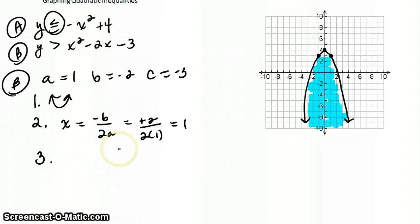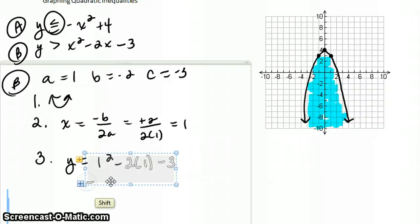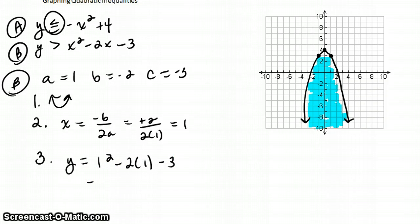Our vertex is going to be, well, the x coordinate will be 1. We need to plug that in to find our y coordinate. So we have y equals 1 squared minus 2 times 1 minus 3. So that becomes, okay, y equals 1 squared, so that's just 1 minus 2 minus 3. That gives us negative 1 minus 3, which is negative 4. Okay, so our vertex is going to be at 1, negative 4. So you can go ahead and plot that if you want. It's going to be right there.